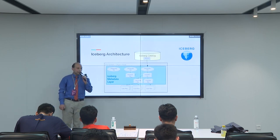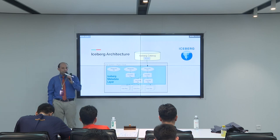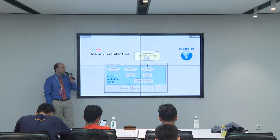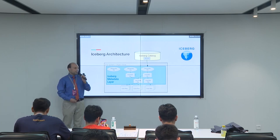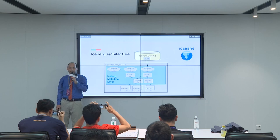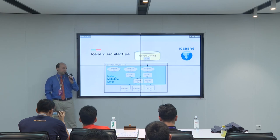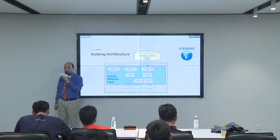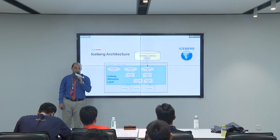Here you can see the architecture of Iceberg. At the top, you've got a catalog. It can be various types of catalogs, but the main requirement is that there needs to be a pointer that points to the top-level metadata file for each table, and updating this pointer has to be atomic. Then you've got the metadata layer, which contains various layers of metadata files that ultimately point to data files — this is how you know what data is part of your table.